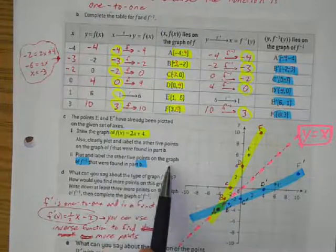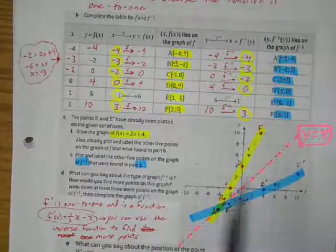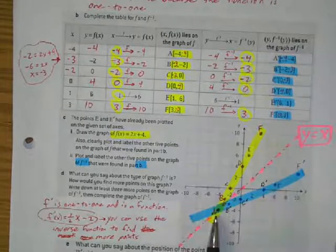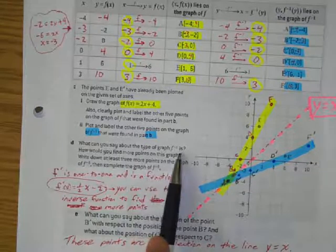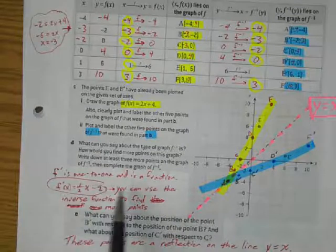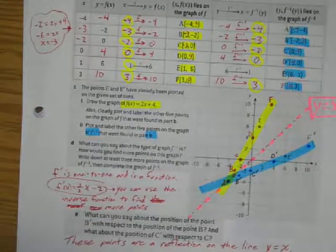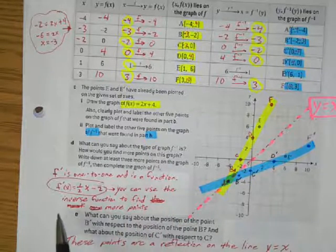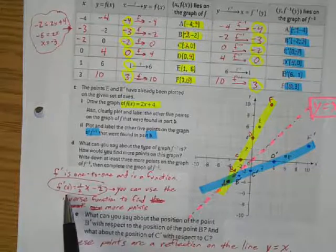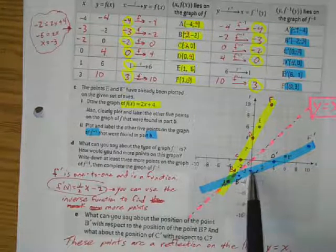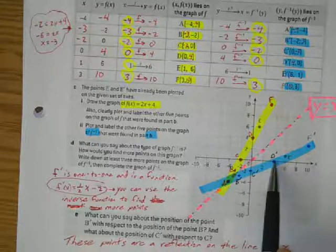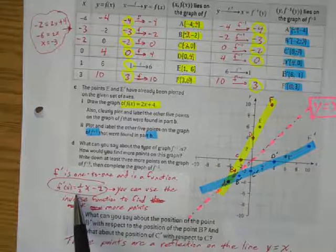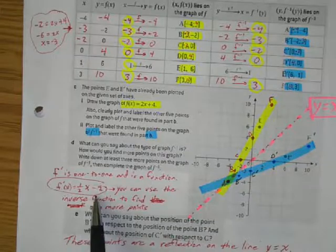I then plotted the inverse function by switching x and y: negative 4 comma negative 4, negative 3 comma negative 2, and so on. You can find more points by plugging in x values to get y values. Looking at the inverse graph, if I go up 2 it goes over 4, giving a slope of one-half and a y-intercept of negative 2. In the next example I'll show how to get this function algebraically.